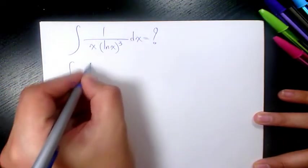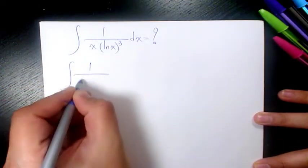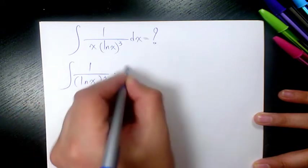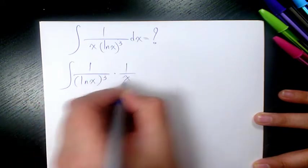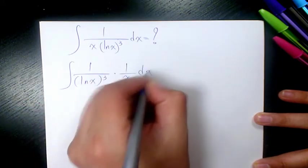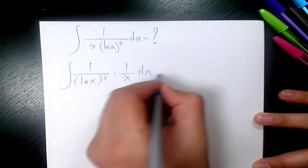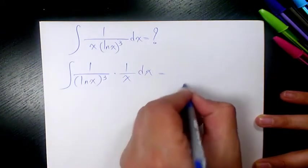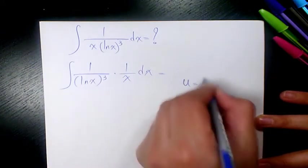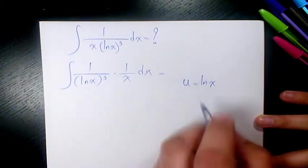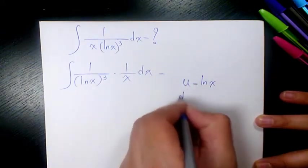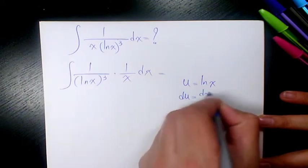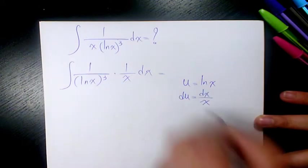First I'm going to separate these two: we have 1 over ln(x) to the power of 3, times 1 over x, dx. I'm going to let u equal ln(x), then du will be equal to dx over x.